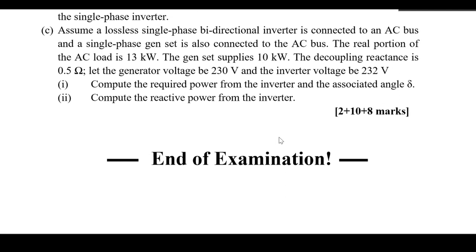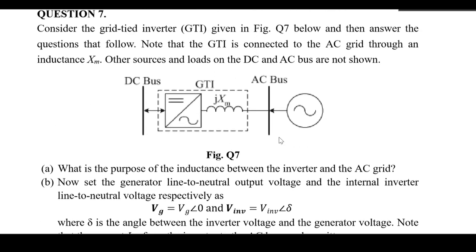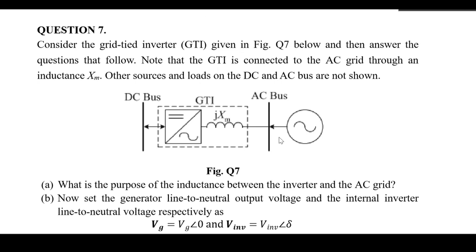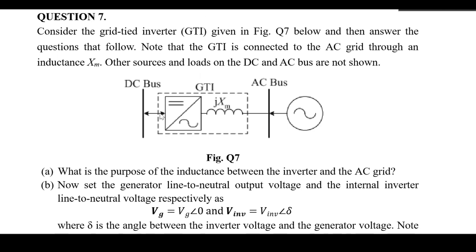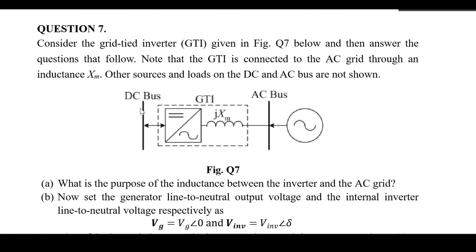In this video we're going to discuss about a grid-tie inverter. We're going to solve one problem. The problem reads: consider the grid-tie inverter given in figure question 7 below and then answer the questions that follow. Note that the GTI is connected to the AC grid through an inductance Xm. Other sources and loads on the DC and AC bus are not shown.